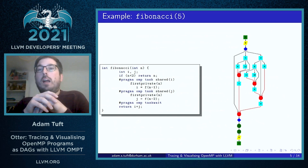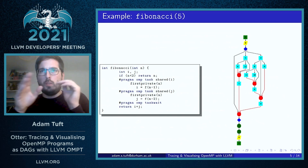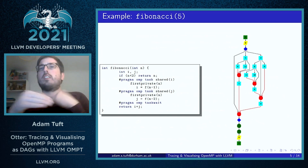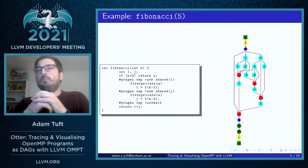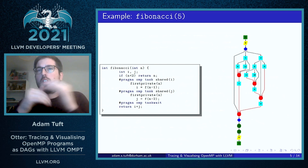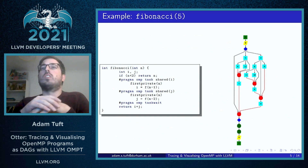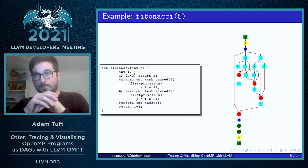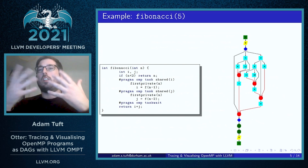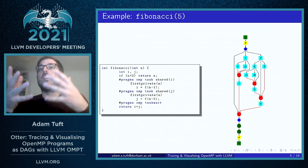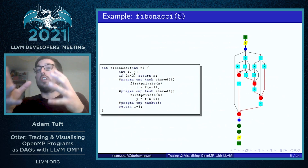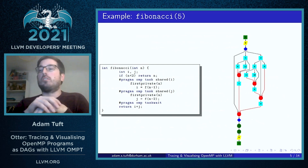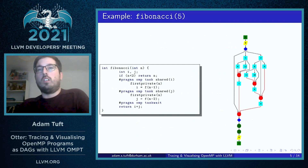represented by the red barrier here. So we can see we've taken direct measurements from a real program at runtime of the runtime events encountered in the OpenMP program, and this has been used to generate a task graph that directly visualizes the underlying task graph structure of this task-based program.